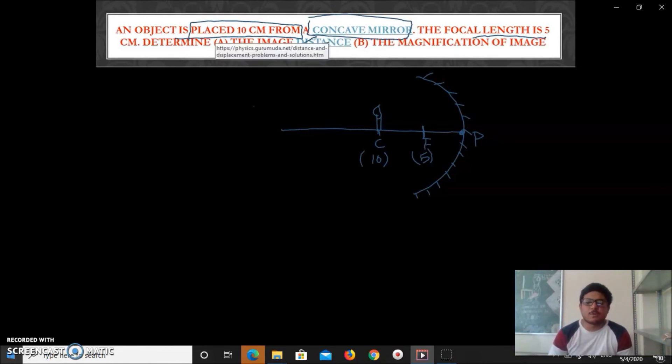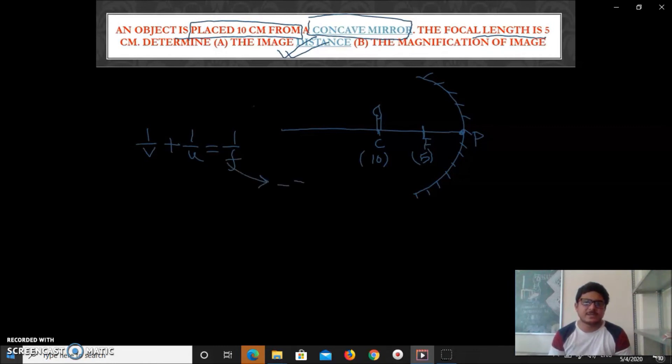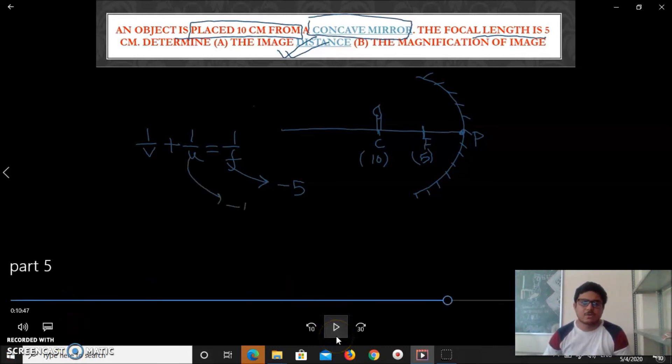So what to do? Image distance we have to calculate now. Means object distance, focal length is given, let us calculate image distance. Very easy, we know the formula: 1/v + 1/u = 1/f. Everything is known except image distance means v. Now dear cadets, why I am writing f equal to -5, u equal to -10?